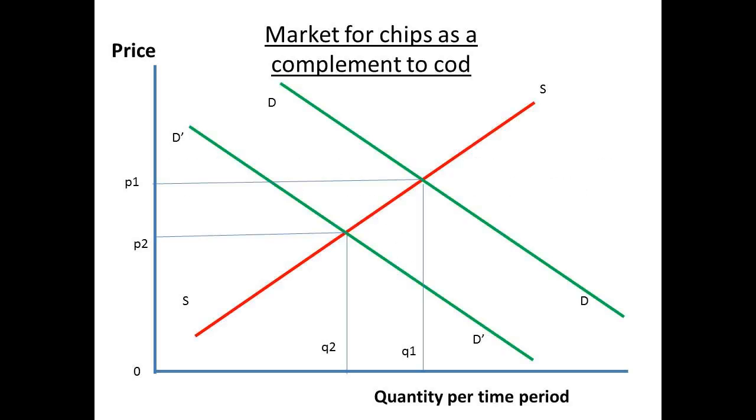If we are going to enjoy our cod, then we also need our chips, or fries if we were in the United States. How will the market for chips be affected? Before the change in supply of cod, there was an equilibrium at price P1 and quantity Q1.